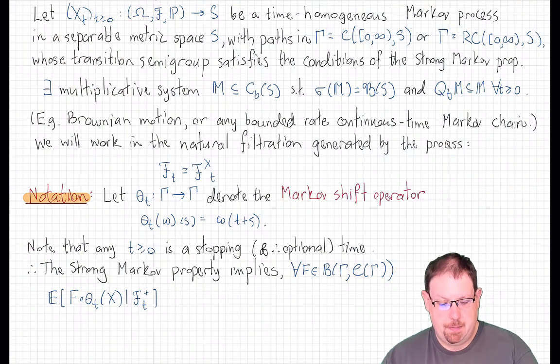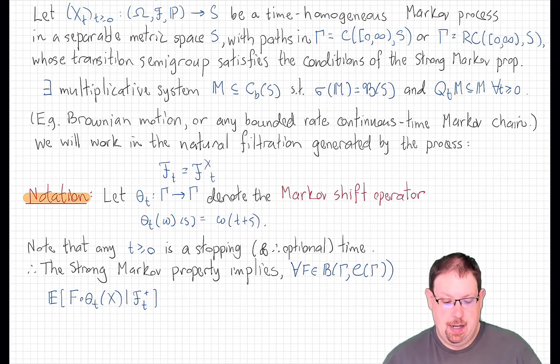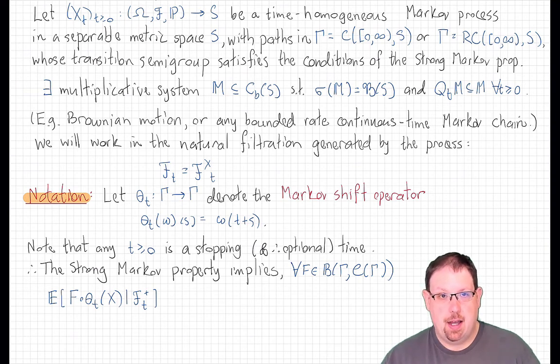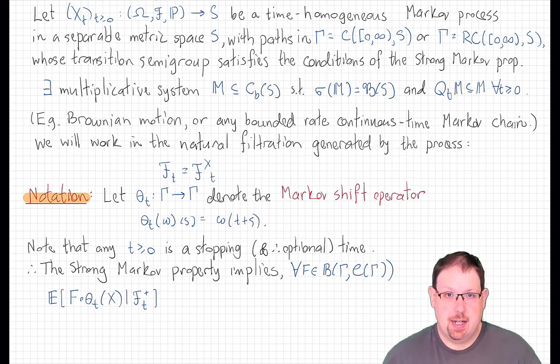We're now going to look at some consequences of the strong Markov property. We'll use the same setup that we used in the last three lectures. Our process will be a time-homogeneous Markov process in a separable metric space as its state space, whose paths are assumed to be continuous or at least right continuous.